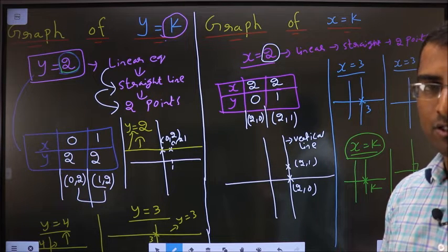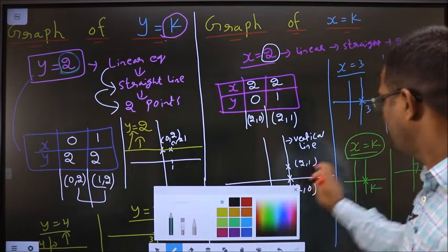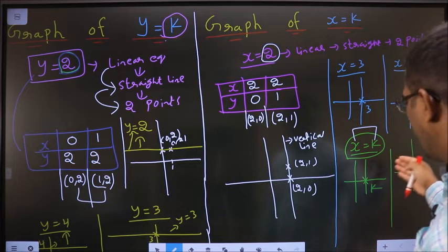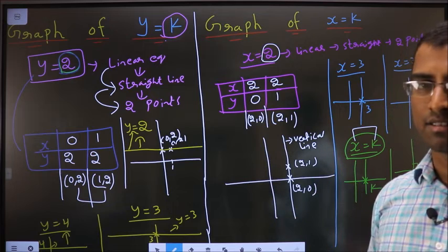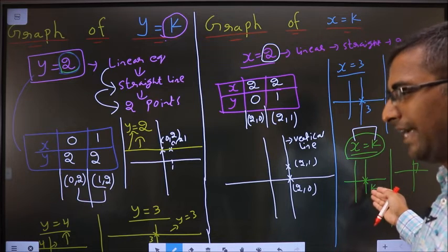In that way also you can remember. x equal to any constant, you will get a vertical line. Or x equal to constant, you will get a line perpendicular to x-axis. These two conclusions we have derived. Vertical line or line perpendicular to x-axis, in whichever way you should remember.